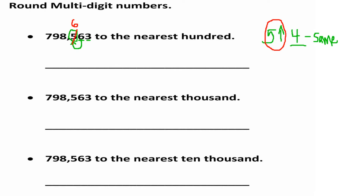All the other digits in smaller place values we're going to turn to 0, because we're only concentrating on rounding to the nearest hundred and all smaller values become zeros. So when we rewrite this number, we have 798,600.